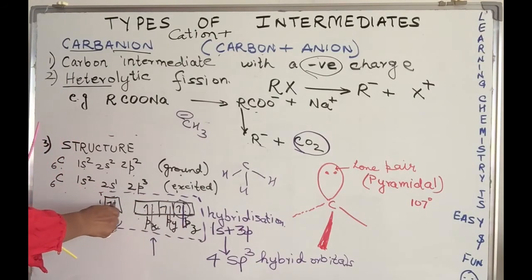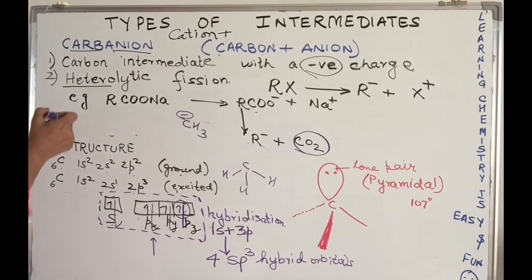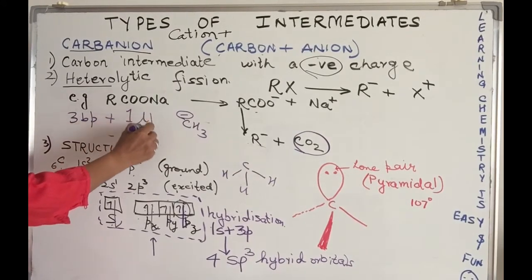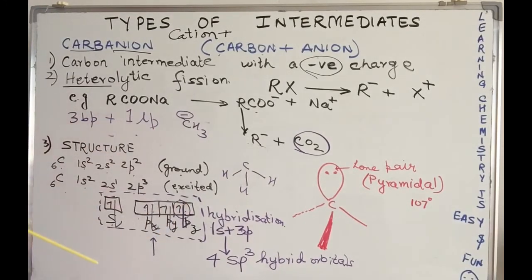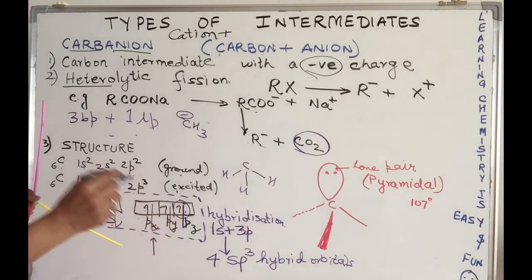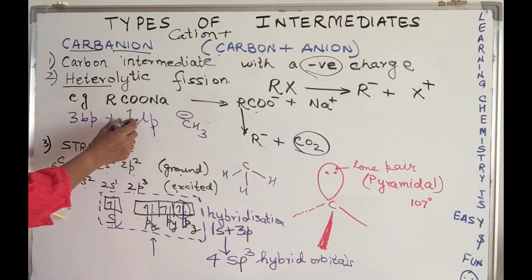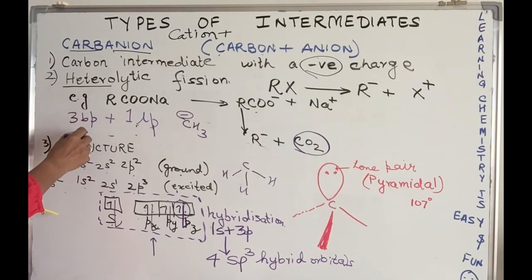I have one bond pair, two bond pairs, three bond pairs, and one lone pair. That orbital is involved in hybridization but the electron pair is a lone pair. This lone pair has repulsion—not lone pair, lone pair, but lone pair, bond pair repulsion.